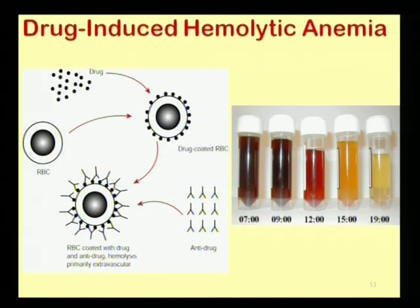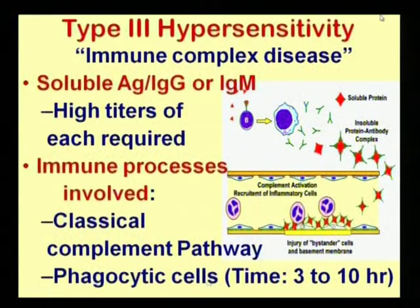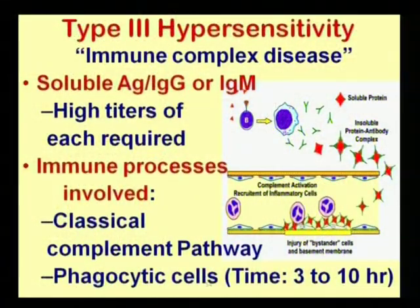As explained by colleague Dr. Hardik Bhatti, the key difference between type 2 and type 3 hypersensitivity is: in type 2, the antigen is present on the surface of the cell, not in free form; while in type 3, the antigen is present only in soluble form. When soluble antigen at high concentration binds with soluble immunoglobulin, they form a complex.